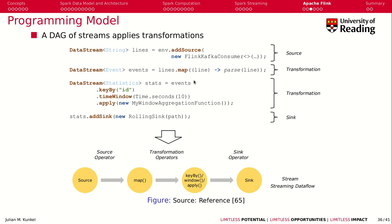The input here is a Flink Kafka consumer that produces string data. Then we create some statistics using a statistics class with a specific aggregation function specified by the user, which then gets stored in a rolling sink.